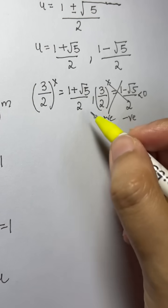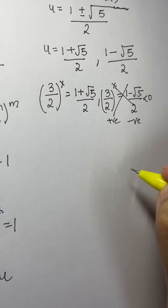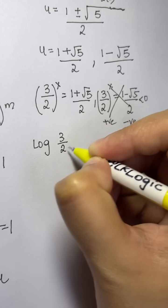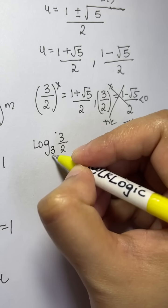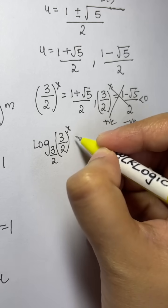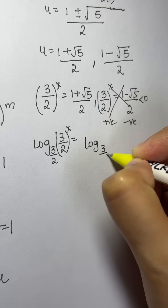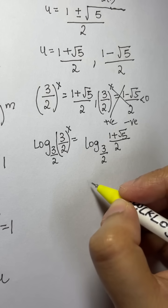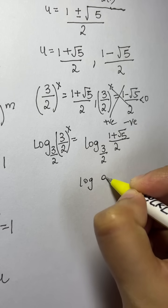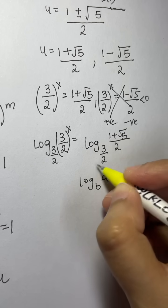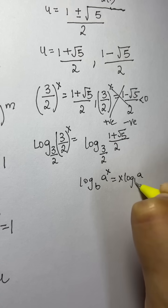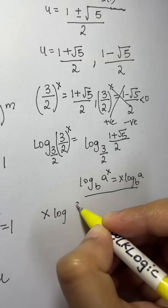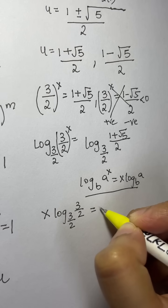We solve (3/2)^x equals (1 plus square root of 5) over 2 by applying logarithm of the same base on both sides. Taking log base (3/2) of both sides: log base (3/2) of [(3/2)^x] equals log base (3/2) of [(1 plus square root of 5) over 2]. Using the rule that the power comes out in front, we get x times log base (3/2) of (3/2) equals log base (3/2) of [(1 plus square root of 5) over 2].